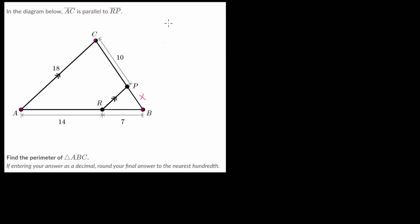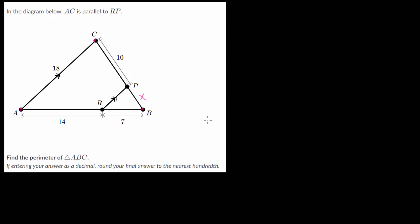The way to approach this problem is to prove that the smaller triangle is similar to the bigger triangle, triangle ABC. Once we prove that the two triangles are similar, we can set up equations, since in similar triangles the sides are proportional to each other. To prove they are similar, we just need to prove that they share three sets of equal angles.